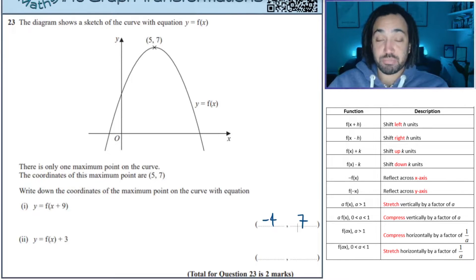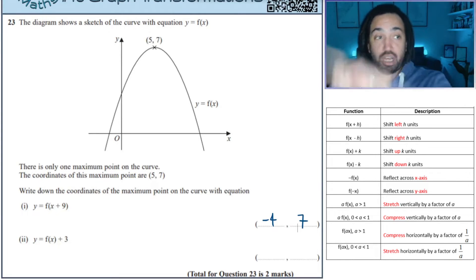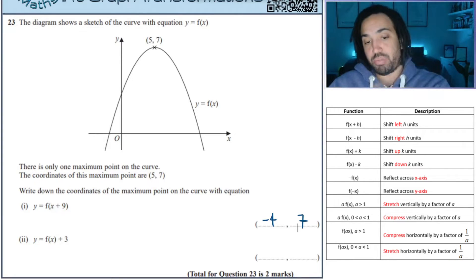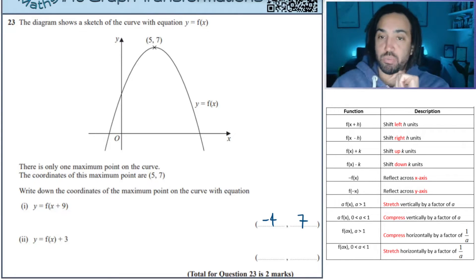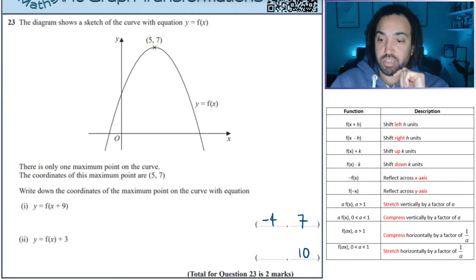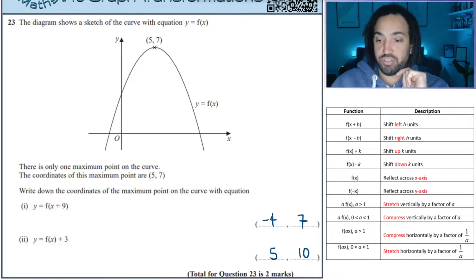f(x) + 3 means up by 3, which means the y coordinate goes up by 3. The x coordinate remains unaffected.